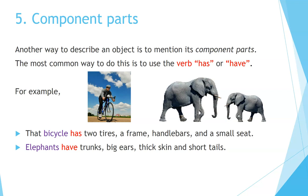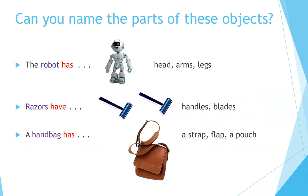Component parts. Another way to describe an object is to mention its component parts. The most common way to do this is to use the verb 'has' or 'have.' For example, that bicycle has two tires, a frame, handlebars, and a small seat. Elephants have trunks, big ears, thick skin, and short tails. Can you name the parts of these objects? A robot has a head, arms, and legs. Razors have handles and blades. A handbag has a strap, a flap, and a pouch.